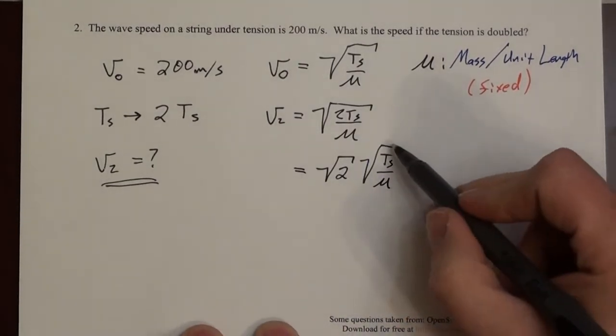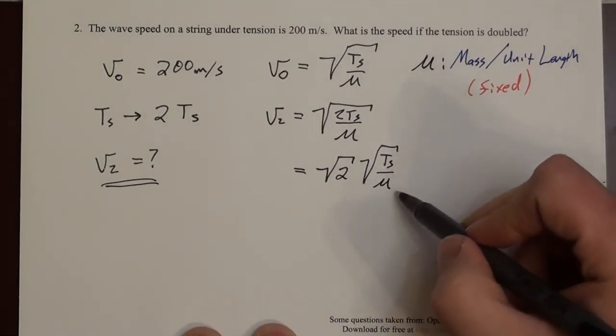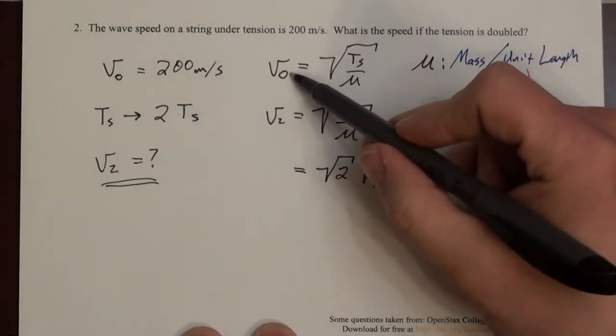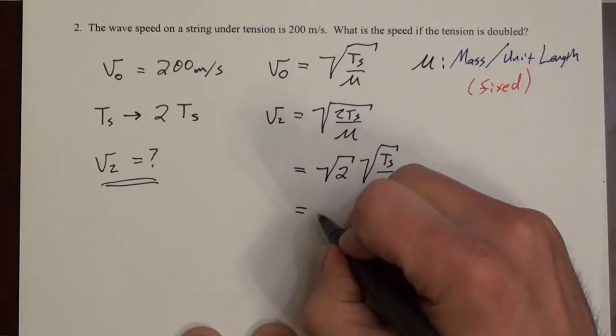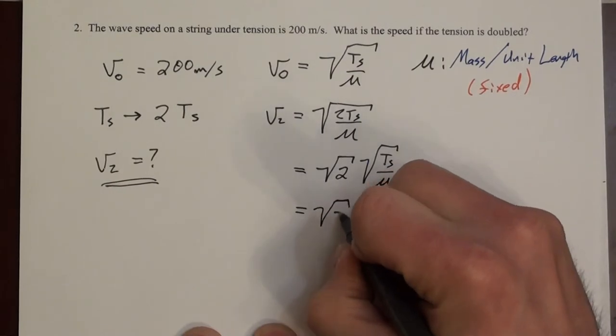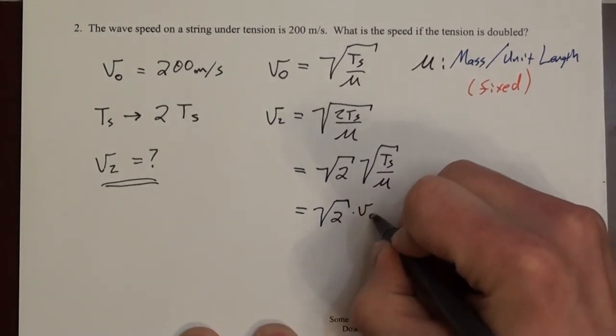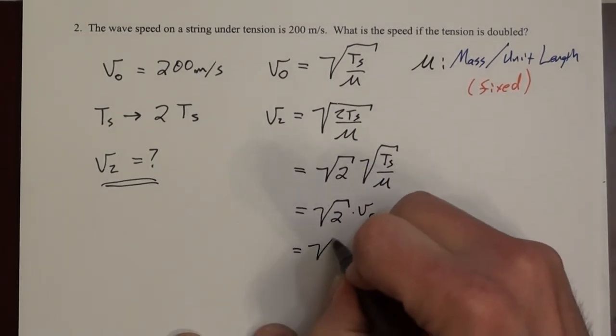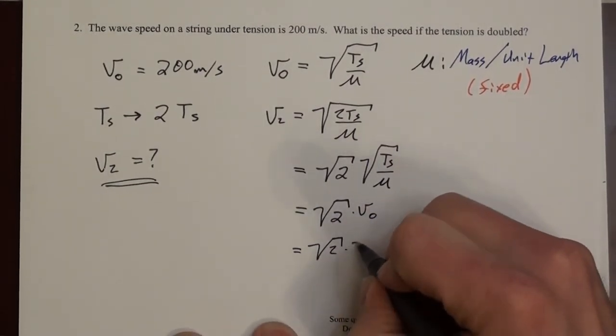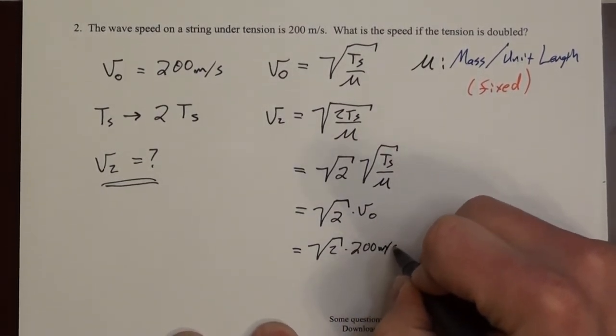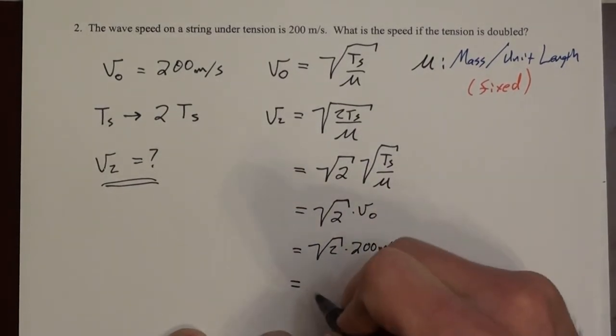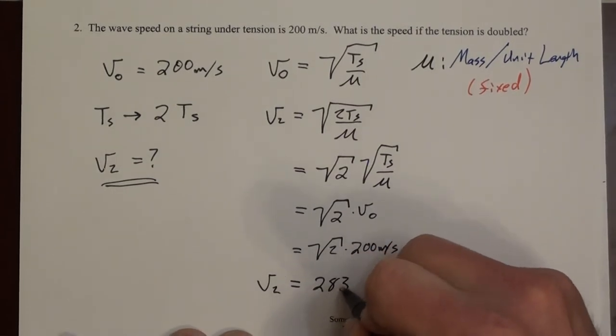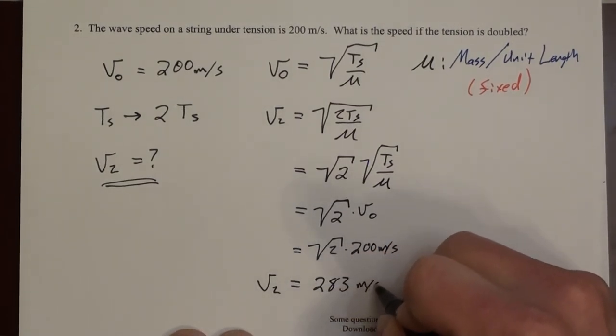All right, then we just need to recognize the square root of Ts over mu—that's what we call v0. So we factored out this root 2, and now we're multiplying by v0. Well, v0 we have a number for. So this is square root of 2 times 200 m/s. And what we get there, v2 must be 283 meters per second.